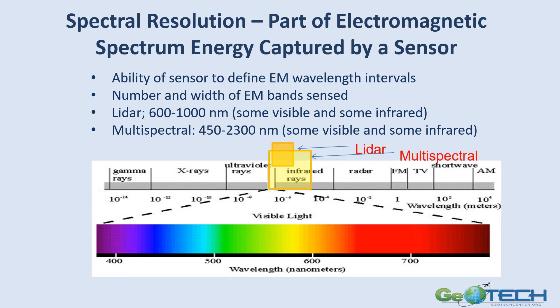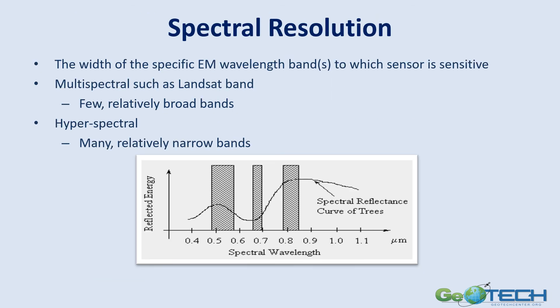Spectral resolution defines what part of the electromagnetic spectrum can be captured by a specific sensor — it's those intervals and wavelengths. LIDAR, for instance, can capture within 600 to 1000 nanometers, some of which are in the visible range and some in the infrared. Multispectral sensors have lots of bands that are very narrow, between 450 and 2300 nanometers — again, some in the visible and some in the infrared. The width of the specific EM bands to which a sensor is sensitive is its spectral resolution. For multispectral sensors such as Landsat, there are relatively few bands — eight to ten — with relatively broader bands. With hyperspectral sensors, there are many more bands, but they are generally much narrower.